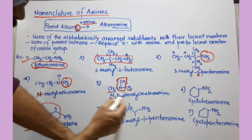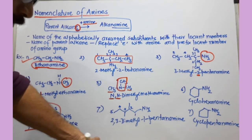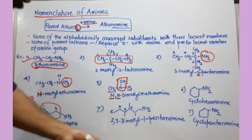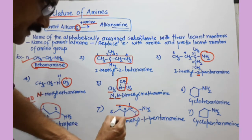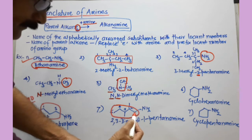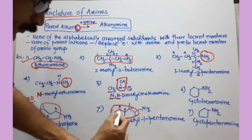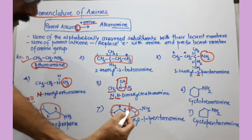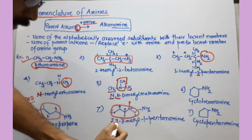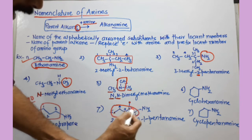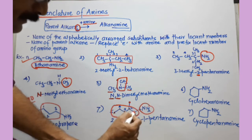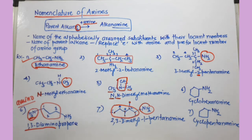If a skeletal structure is given, just find the longest chain of carbon. In this example the longest chain has 5 carbons — 1, 2, 3, 4, and 5. At the second and third carbons there are methyl groups. The amino group is present at carbon number 1, so the name is 2,3-dimethyl-1-pentanamine. In this way you can provide systematic names to aliphatic amines.